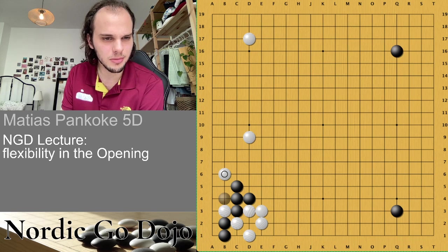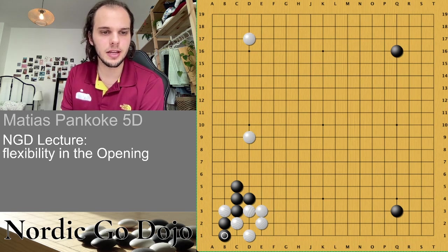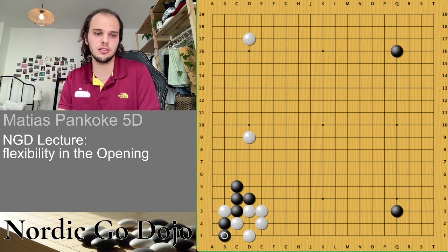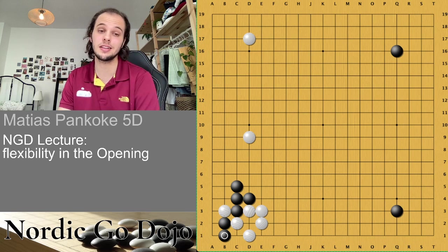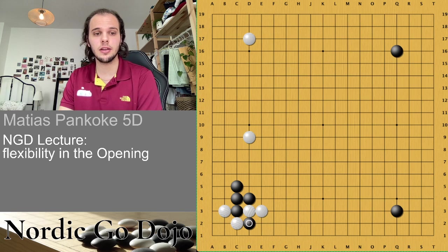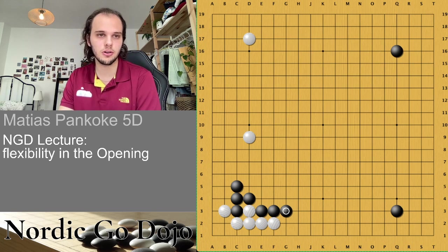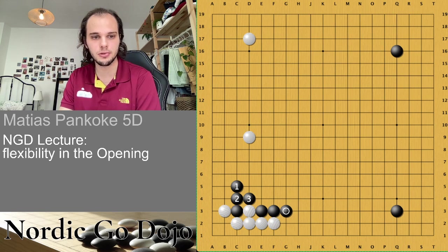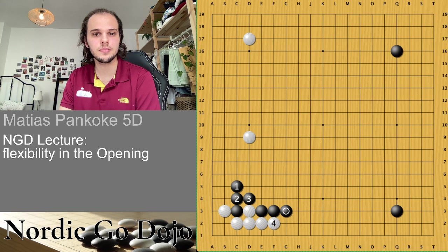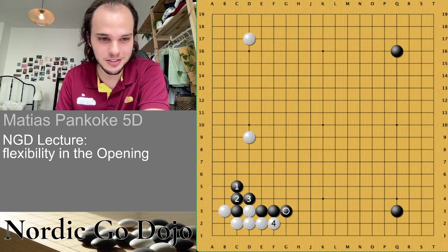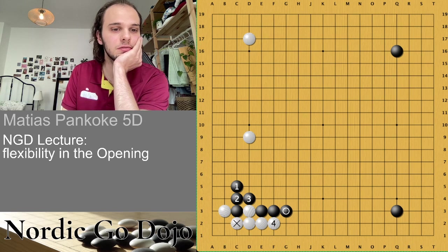The embarrassment I caused with my empty triangle here is the embarrassment that white causes by pushing here — that's my reasoning. Someone confirms c4 is a possible move, good. Like this, black gets some influence. The corner is actually still just alive. This is a variation black can do in case he doesn't like all the shenanigans with the cut here.